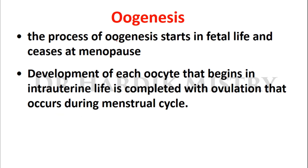The process of oogenesis starts in the fetal life and ceases at menopause. In contrast, in males, spermatogenesis starts only after puberty. Development of each oocyte begins in intrauterine life and is completed with ovulation that occurs during the menstrual cycle.